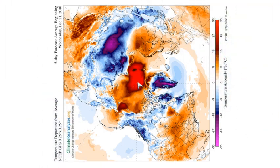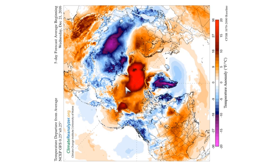In order to explain this a little bit further, I've brought up the surface temperature anomaly map for today. You can see that we have this very cold area here over Siberia, and this warm area over the North Pole. In both cases, the temperature anomaly is pretty large — about 20 degrees colder than average here, and about 20 degrees warmer than average here.